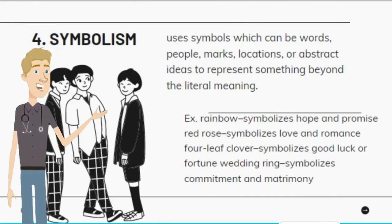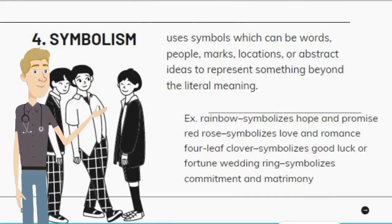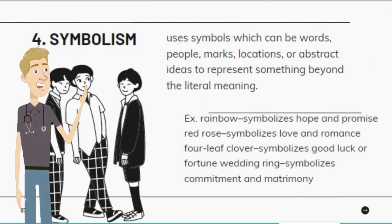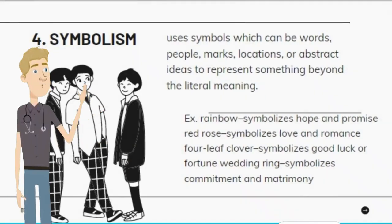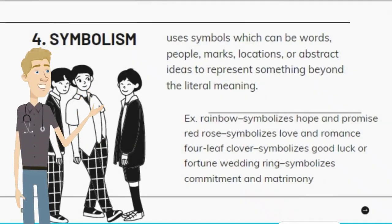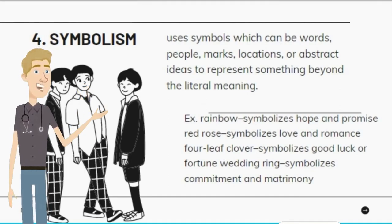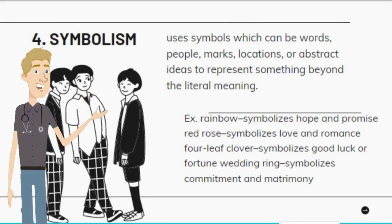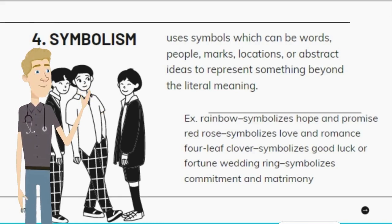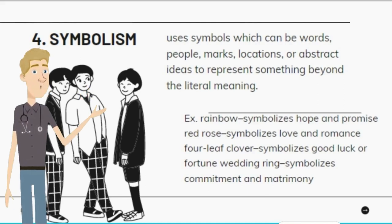Symbolism uses symbols which can be words, people, marks, locations, or abstract ideas to represent something beyond the literal meaning. Example: A rainbow symbolizes hope and promise. A red rose symbolizes love and romance. A four-leaf clover symbolizes good luck or fortune. A wedding ring symbolizes commitment and matrimony.